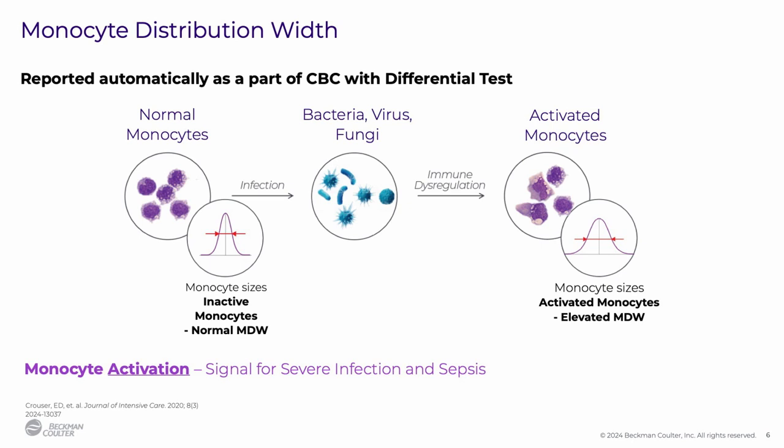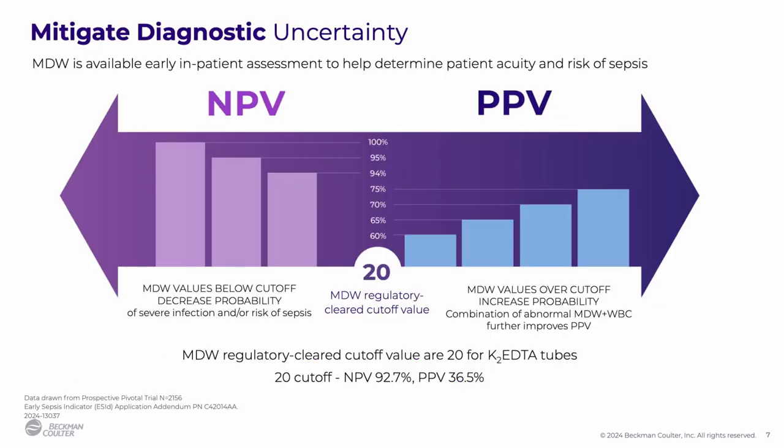MDW provides additional objective information during patient assessments to help differentiate between infectious and non-infectious etiology. The premise behind MDW is that monocytes change size and shape when activated by the presence of pathogens, whether bacterial, viral, or fungal. We can detect this heterogeneity during the CBC with differential. MDW is a risk stratification tool, and it measures the risk that a patient has sepsis or will develop sepsis in the next 12 hours.